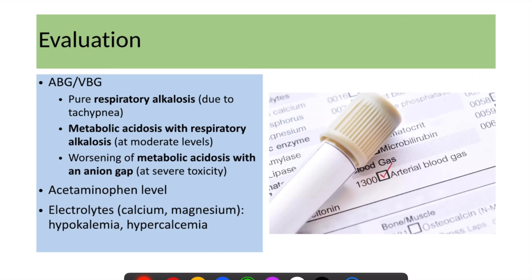ABG and VBG provide very significant information regarding salicylate toxicity. A patient can present with pure respiratory alkalosis due to tachypnea, metabolic acidosis with respiratory alkalosis at moderate levels, and at severe toxicity, worsening metabolic acidosis with an anion gap.